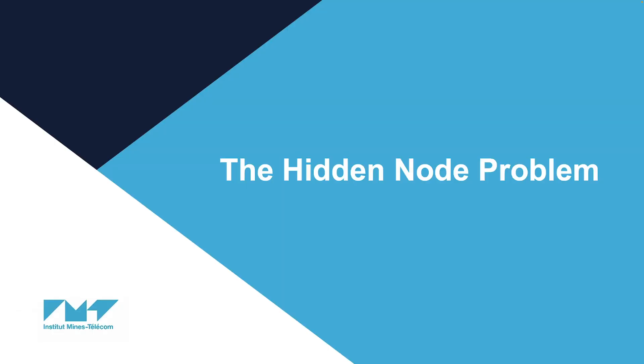Now, there are a few scenarios that might cause a collision in CSMA, and one of them is called the hidden node problem.